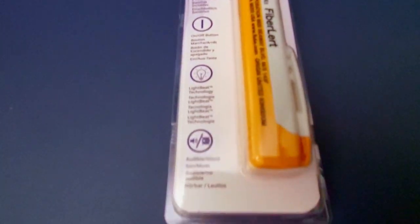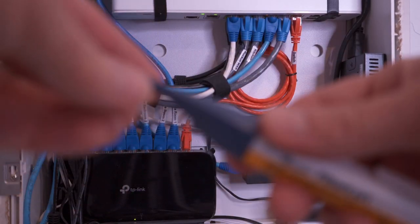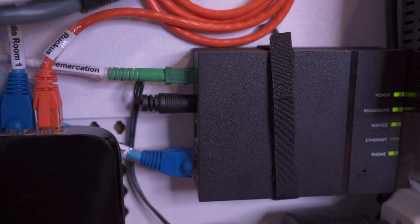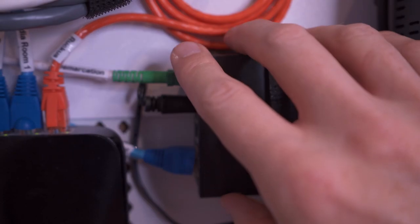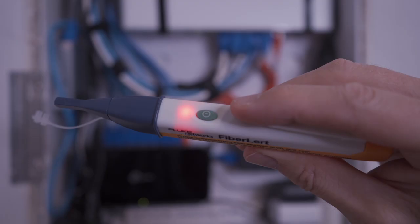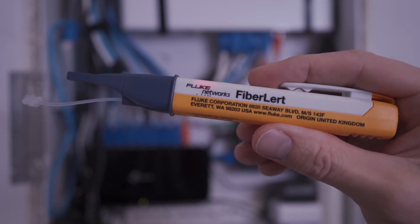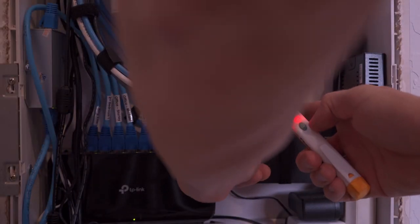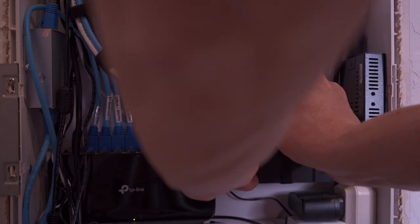So, first thing you want to do, you want to remove the top here, like this. Now, we're going to test the patch cable first, and then I'll test the port. First thing, we'll just turn it on. Good here. Next thing I'll do is I'm going to unplug this. Always remember, do not look directly at the end of the fiber line, okay?